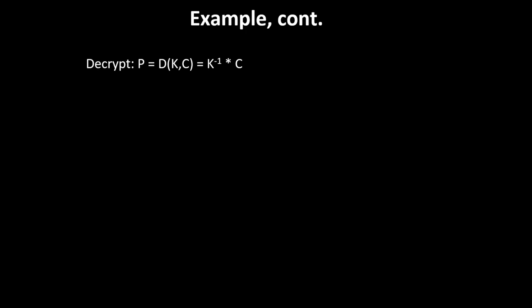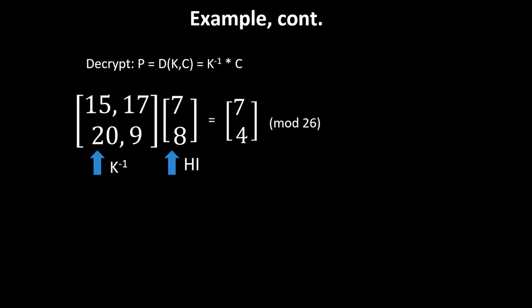To decrypt and get back the plaintext vector P, we have the function to decrypt that depends on K and C. We take the inverse of K, as we found how to calculate, and multiply that by C, our ciphertext. We have K inverse, and we take our first vector that is encrypted, in this case HI. We map those two letters: H is 7, I is 8. We do that multiplication, then modulus 26. We do the matrix multiplication, modulus 26 on each element of that resulting vector, and we get [7, 4].